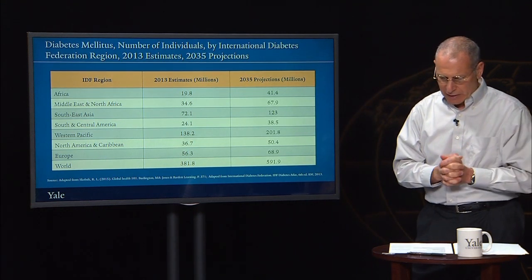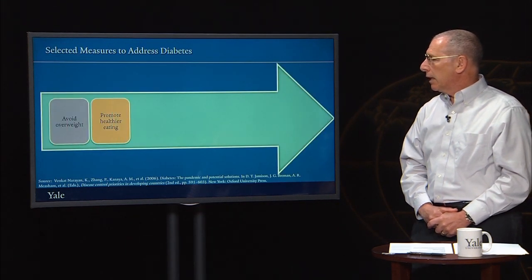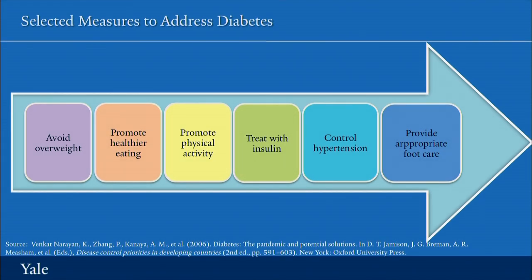In summary, what is recommended for addressing diabetes: first, it's essential to avoid being overweight; second, promote healthier eating; third, physical activity is also very important. People with diabetes often need to be treated with insulin. It's important that hypertension in diabetics be controlled, and because of problems with the lower extremities, appropriate foot care is essential. Countries with appropriate resources should also vaccinate against flu and pneumococcal infections, treat retinal problems, and treat hypertension with ACE inhibitors to prevent kidney problems from worsening — all important for reducing complications and their costs.